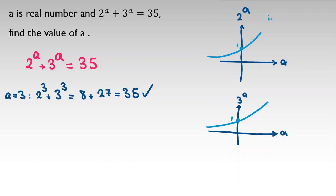As you can see, 2^a is an increasing function, and also 3^a is increasing. So we conclude from these two things that 2^a + 3^a is increasing.